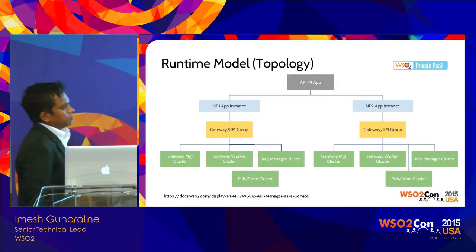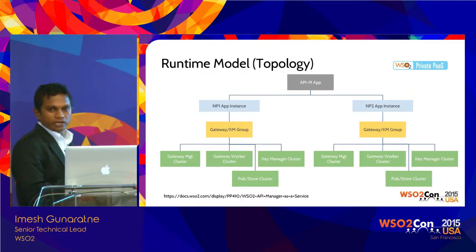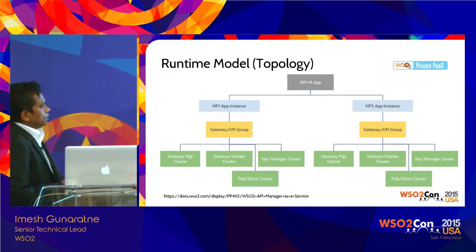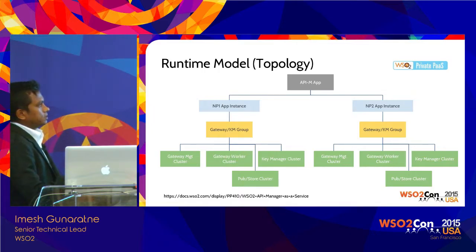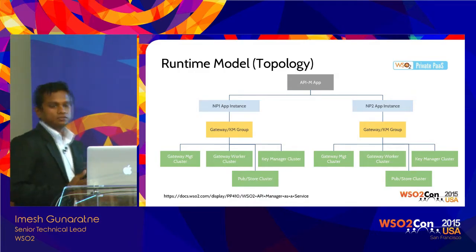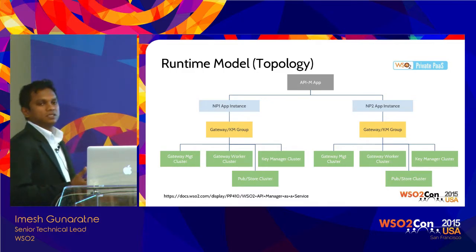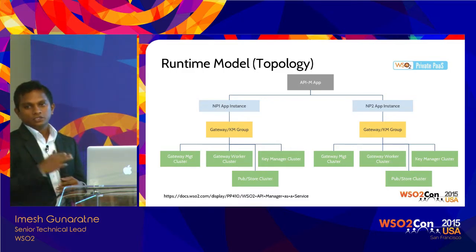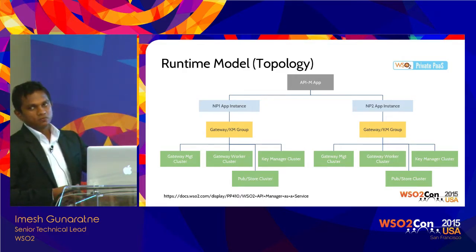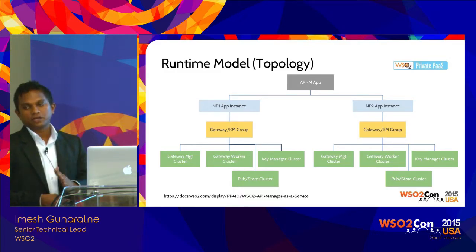Once the application is deployed, an application instance is created per network partition — one for the on-premise cloud and one for the public cloud. The entire underlying tree hierarchy is replicated for each network partition instance. You only deploy once, and using policies you specify where to deploy. The policy defines how to communicate with that particular IaaS, and the application deployment process ensures you get clusters in each region or IaaS provider.